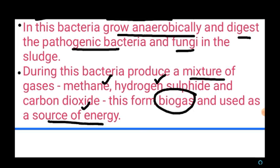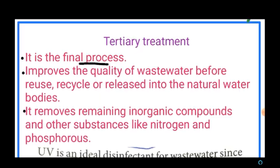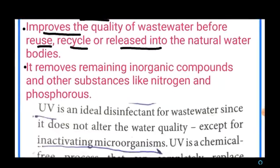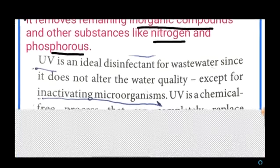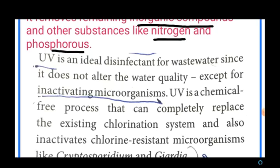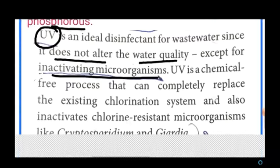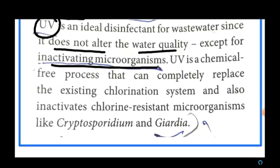After secondary treatment, the sewage water is transferred to tertiary treatment, which is the final process. During tertiary treatment, the wastewater quality is improved before it is reused, recycled, or released into natural water bodies like rivers and streams. Tertiary treatment removes remaining inorganic compounds and substances like nitrogen and phosphorus. The wastewater is then disinfected with UV rays, which do not alter water quality but inactivate microorganisms. UV rays represent a chemical-free process that completely replaces the existing chlorination system.